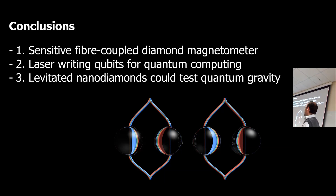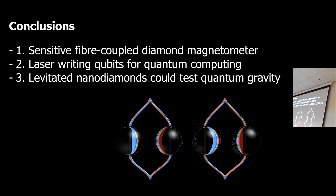Thanks for this very interesting talk. Are there any questions? One question was about permanent electric dipoles in the diamond: yes, there will always be permanent electric dipoles, and those are going to be a source of interaction. But we think that will be less than gravity at the distances we're working at — and needing a certain minimum separation distance is indeed part of why we need to keep them apart.